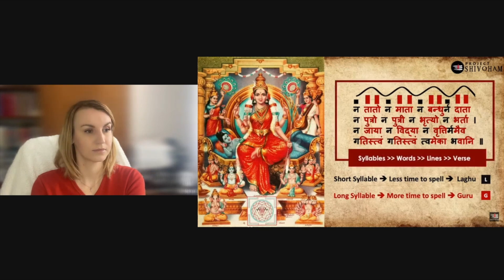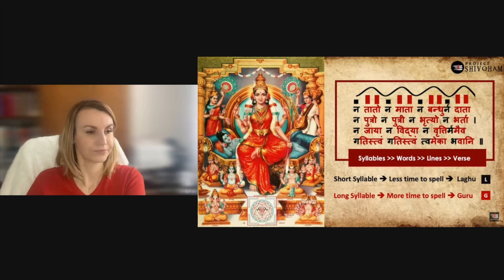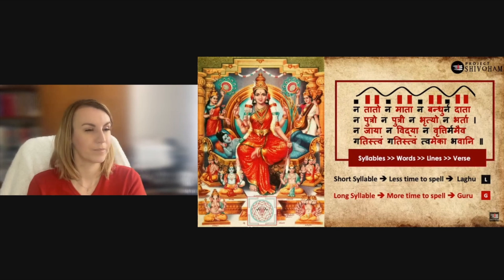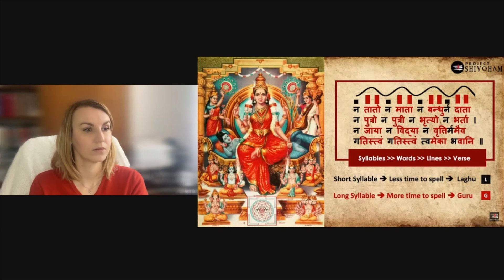Adi Shankaracharya composed this slokum as an alternating sequence of short and long syllables. All the black letters shown are short syllables and all the red letters are long syllables. A syllable with just a vowel is called a short syllable, and a combination of vowel and consonant is a long syllable. In Sanskrit, a short syllable is called laghu and a long syllable is called guru. No matter who recites this slokum, you can feel that rhythmic pattern embedded in it.